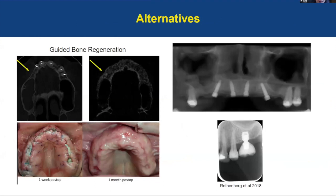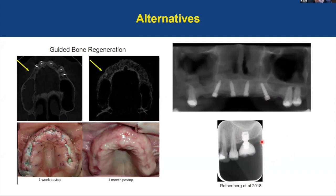If a patient decides they don't want to go through the maxillary sinus procedure, other options include: guided bone regeneration to increase bone thickness in front of the maxillary sinus, placing a tilted implant to create an all-on-four type of configuration, or offering the patient a short implant — all to try to avoid perforating the maxillary sinus.